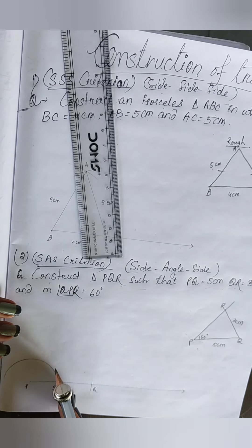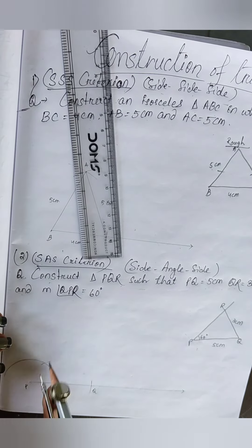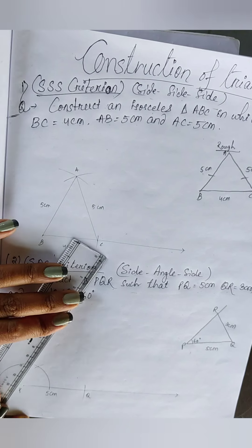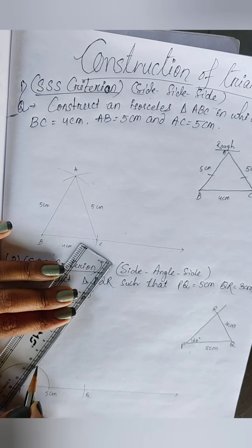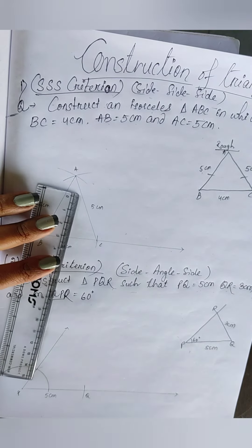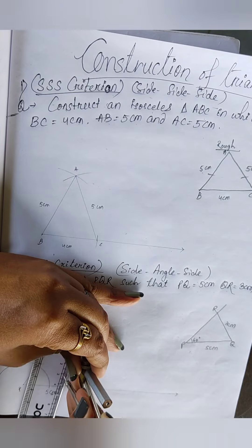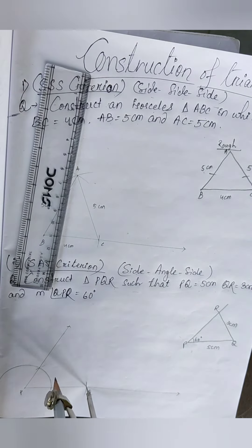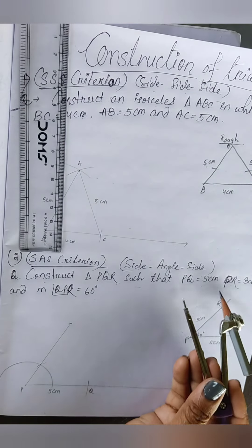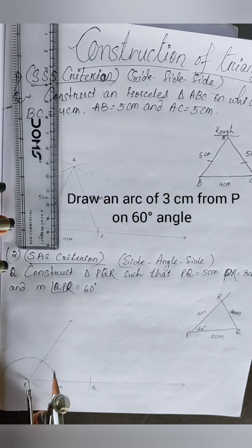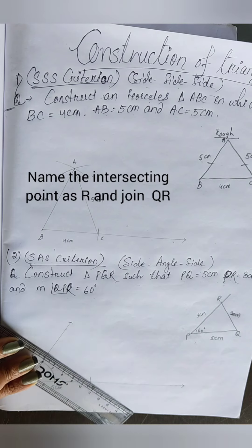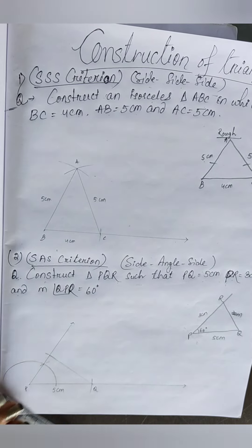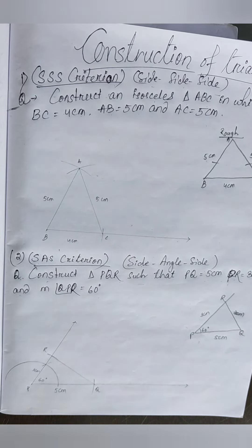As we learned in the previous video how to draw different angles — take P as center, draw a semicircle, and from the intersecting point on the base draw another arc to get 60 degrees. Join and extend the ray to get the 60-degree angle. Now take PR as 3 centimeters and draw the arc from P along that ray. Name the intersecting point as R, then join Q with R. The triangle is done.